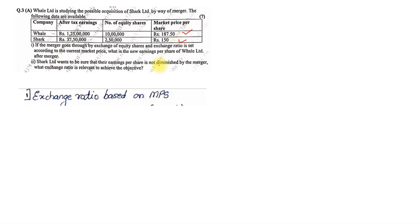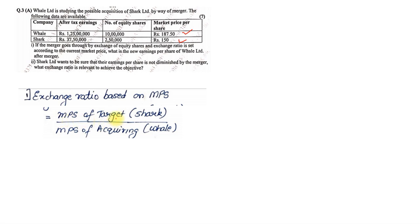The first thing we need to find is the exchange ratio as per market price. The market prices are 187.5 for Whale and 150 for Shark. The formula for exchange ratio based on MPS is: market price of the target company (Shark) divided by market price of the acquiring company (Whale). So 150 divided by 187.5 gives us 0.8 as the exchange ratio based on market price.